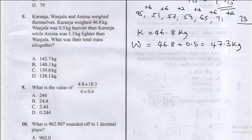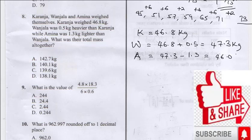Then Amina is going to be 1.3 kg lighter than Wanjala, so Amina will be 47.3 minus 1.3. So this will give us 3 minus 3 is 0, 47 minus 1 is 46.0 kg. So the question says what was their total mass?